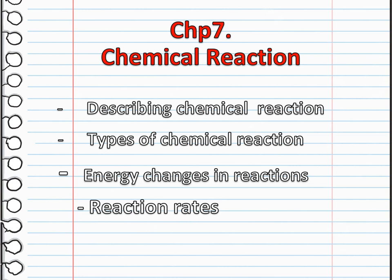Chapter Seven covers chemical reactions. We are going to be describing chemical reactions, types of chemical reactions, energy changes in reactions, and reaction rates. A chemical reaction means that bonds are going to be broken within reactant molecules and new bonds are formed within product molecules in order to form a new substance. Compounds interact to produce new compounds — the starting compounds are called reactants and the newly formed compounds are called products.